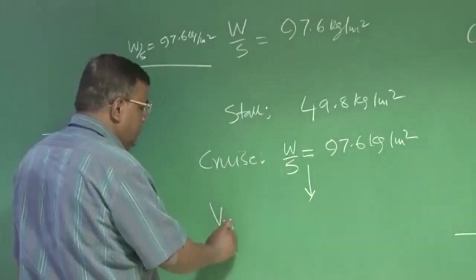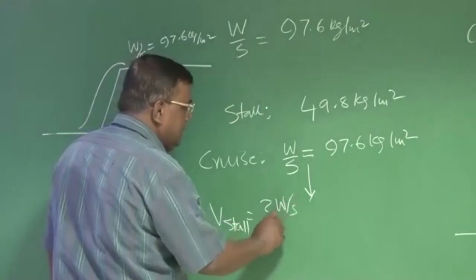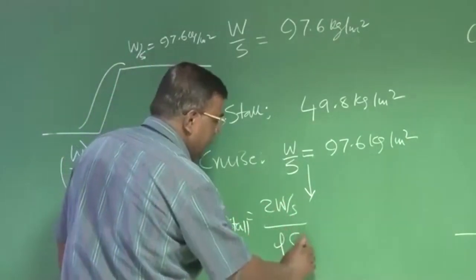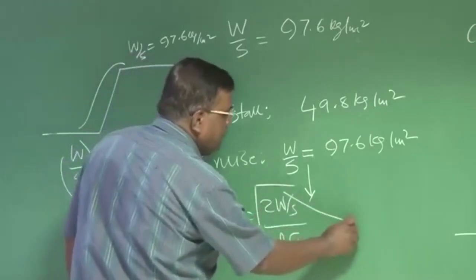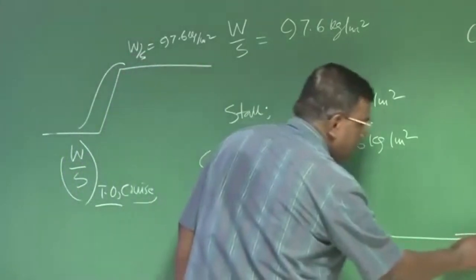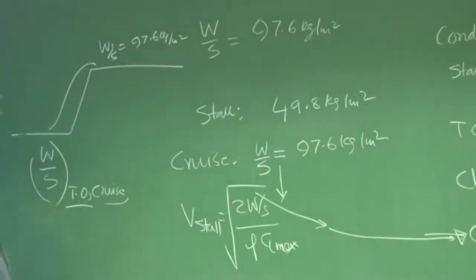As far as stall is concerned, V stall is square root of 2 W by S by rho C L max. W by S, we have picked the value from cruise, which is appropriately corrected for takeoff.